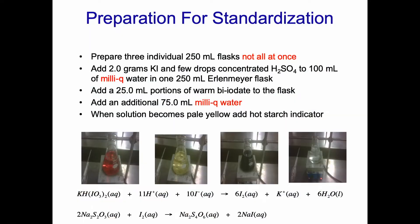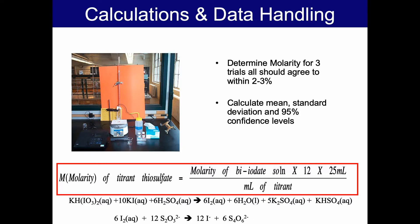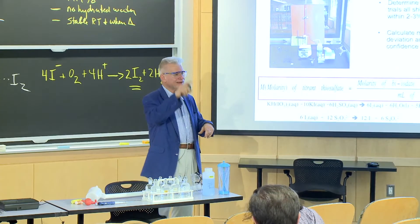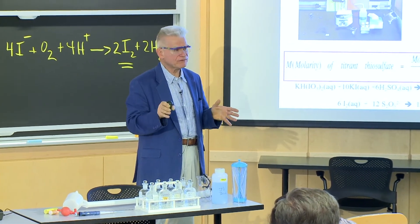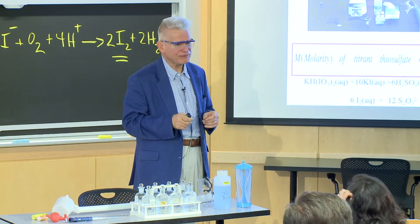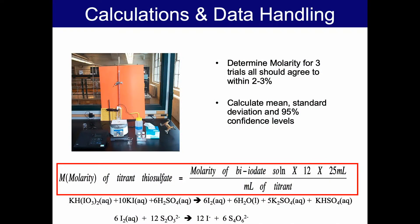Look at the stoichiometry: one biiodate makes 6 I2, each I2 reacts with 2 thiosulfate, so it's 12-to-1, thiosulfate to biiodate. You're going to do three trials — they should all agree to within 2% or 3%. If they don't, do an extra trial or two. Find your mean, standard deviation, and confidence intervals, and give all that information to your TA. The students can then use either the class average or their own results for the dissolved oxygen titration on the next day.